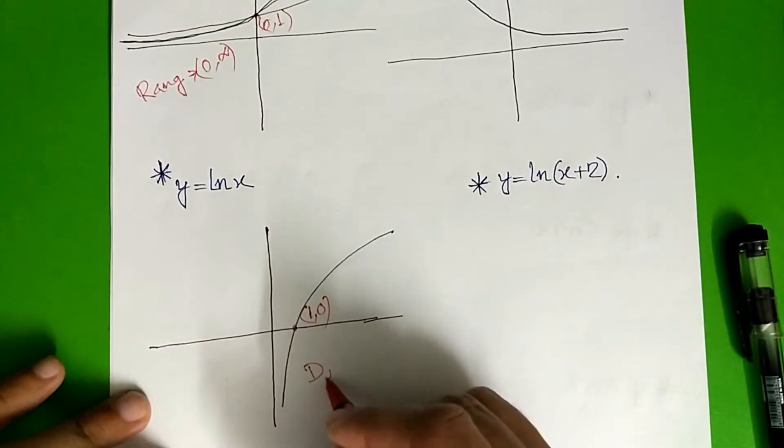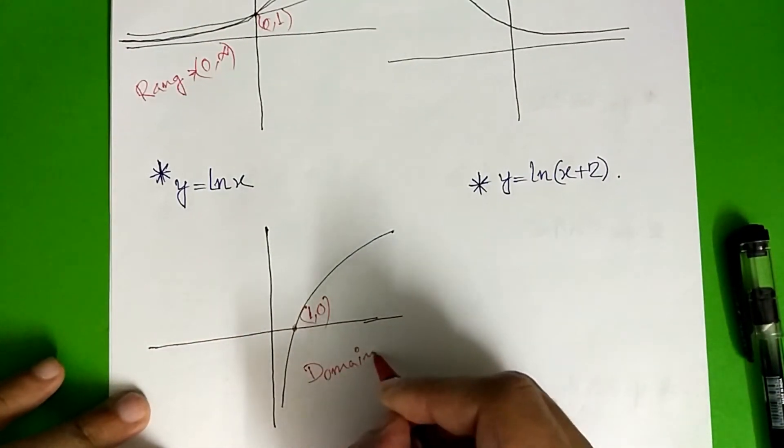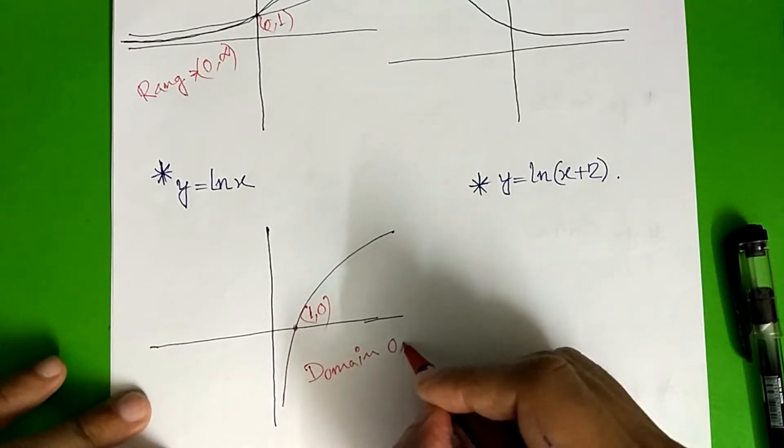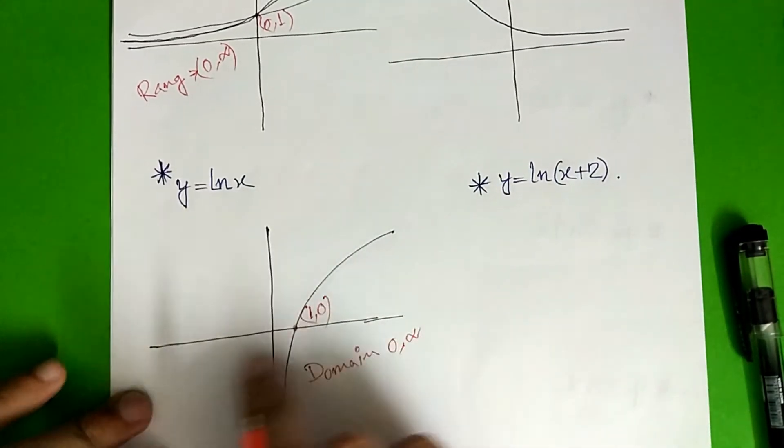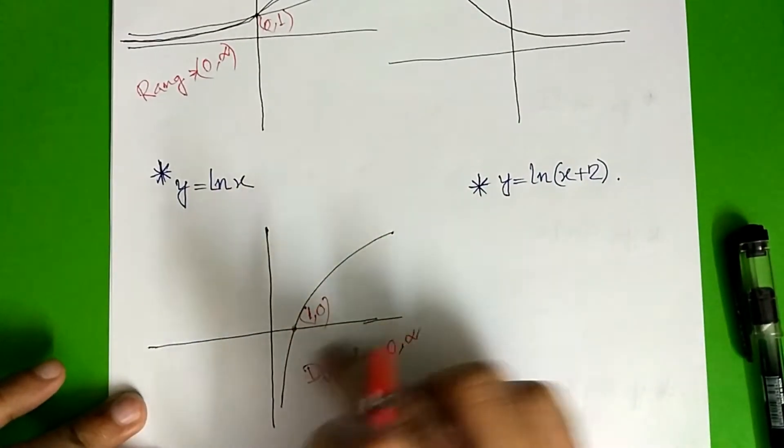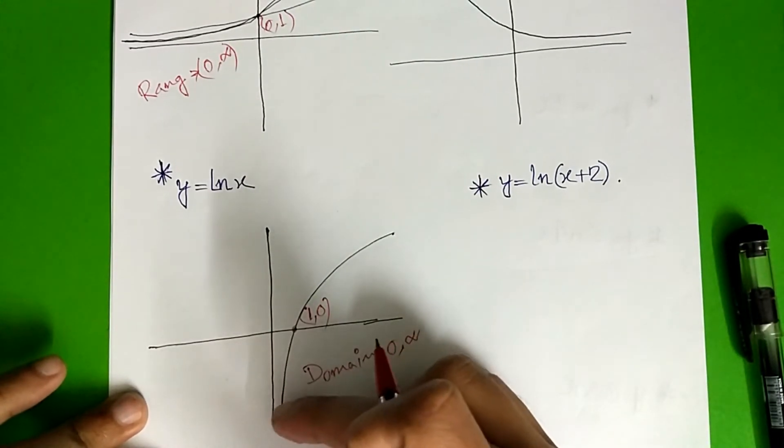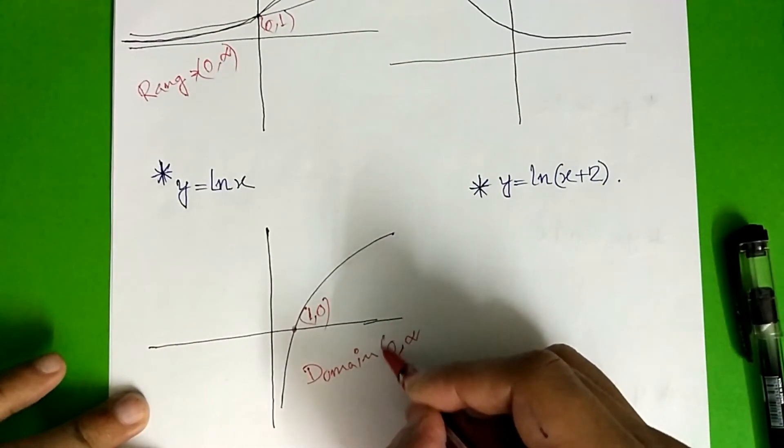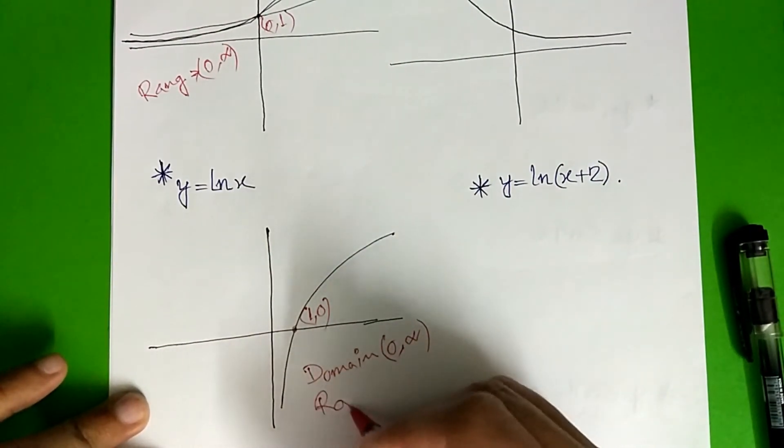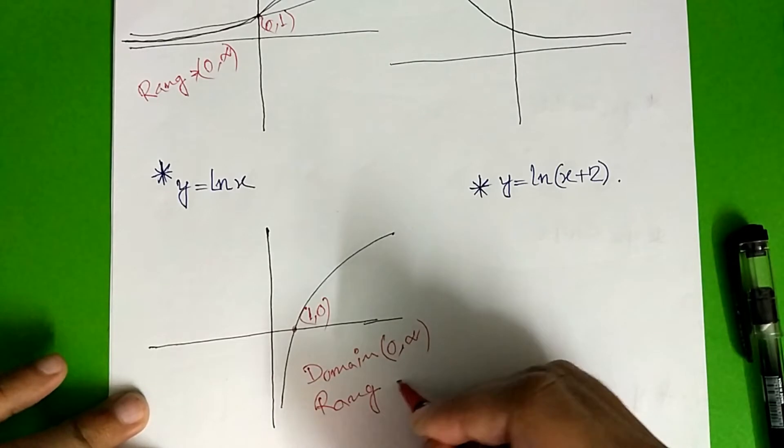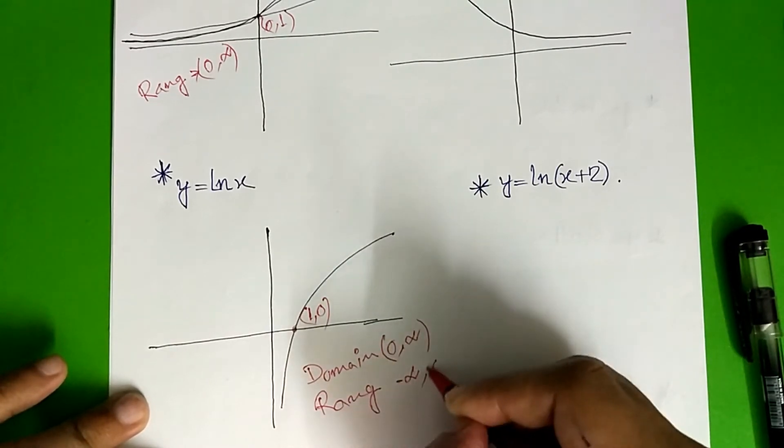Domain is 0 to infinity, that is 0 to infinity, range is minus infinity to infinity.